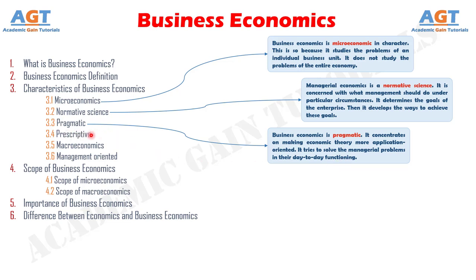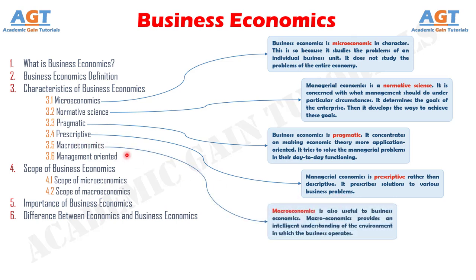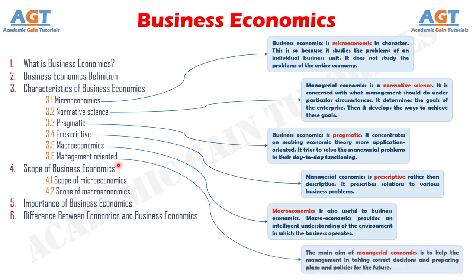Number 4: Prescriptive. Managerial economics is prescriptive rather than descriptive. It prescribes solutions to various business problems. Number 5: Macroeconomics. Macroeconomics is also useful to business economics. It provides an intelligent understanding of the environment in which the business operates. And finally, Number 6: Management-oriented. The main aim of managerial economics is to help the management in taking correct decisions and preparing plans and policies for the future.